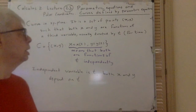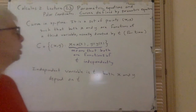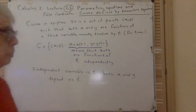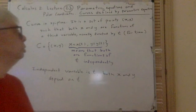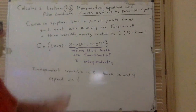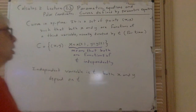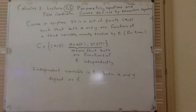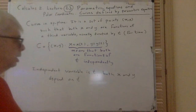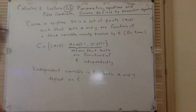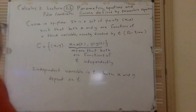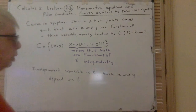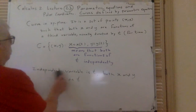We say that a curve is a set of points XY such that both X and Y are functions of a third variable, which we usually denote by T for time. I'll tell you why we use T. The X and Y are independent of each other but both depend on T. The best way to talk about a curve is in fact using physics.